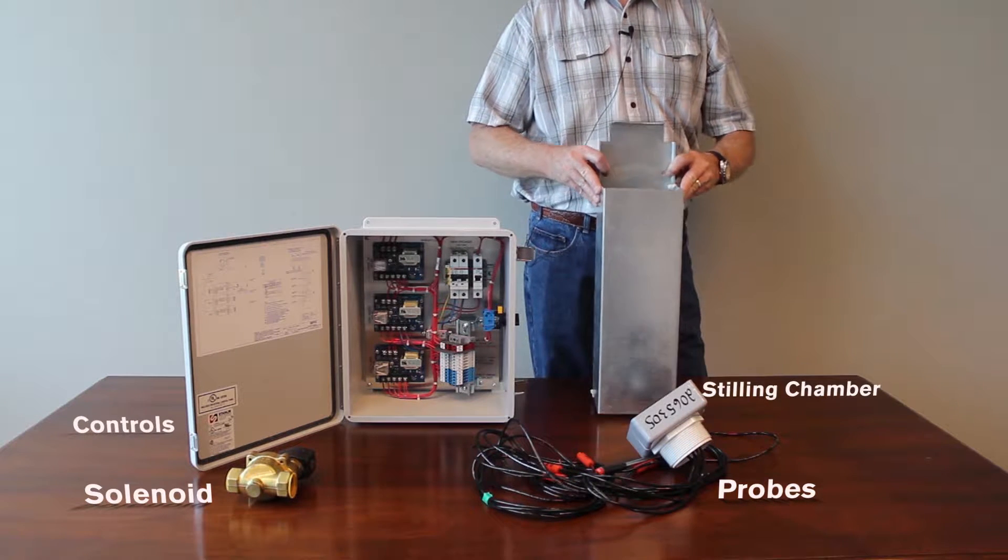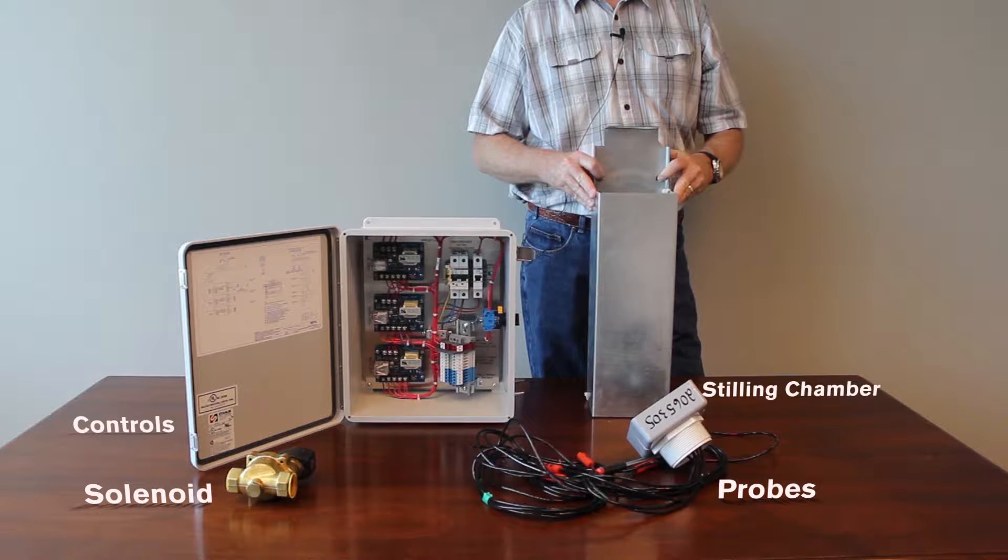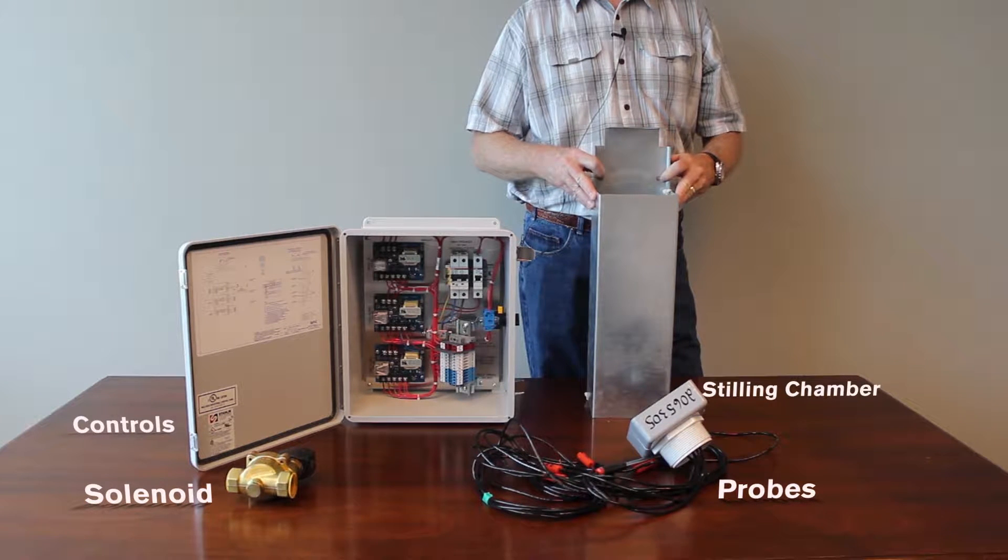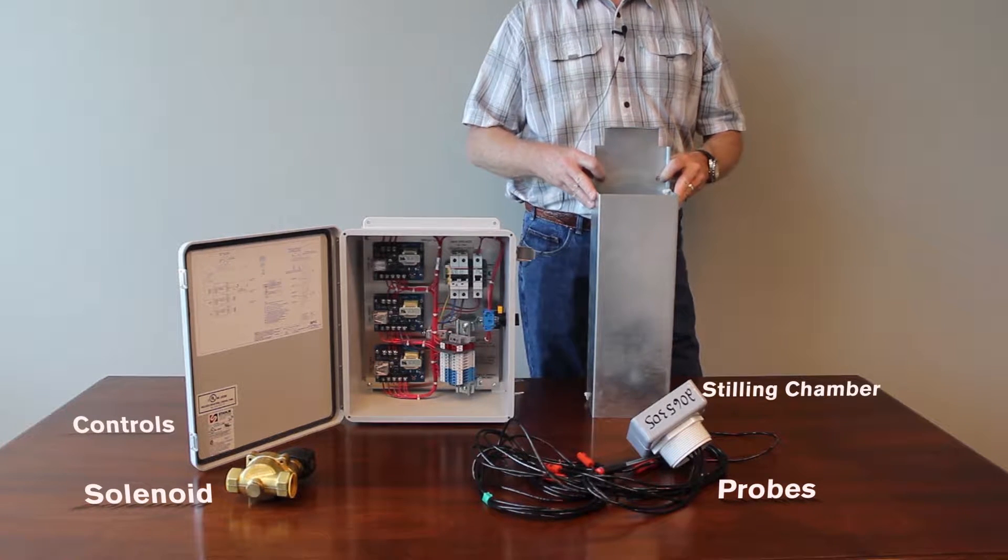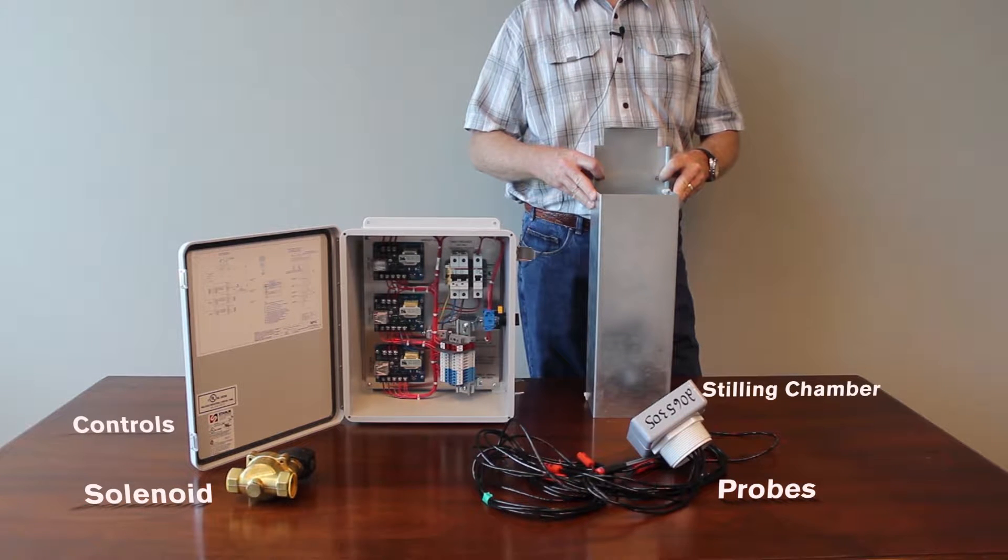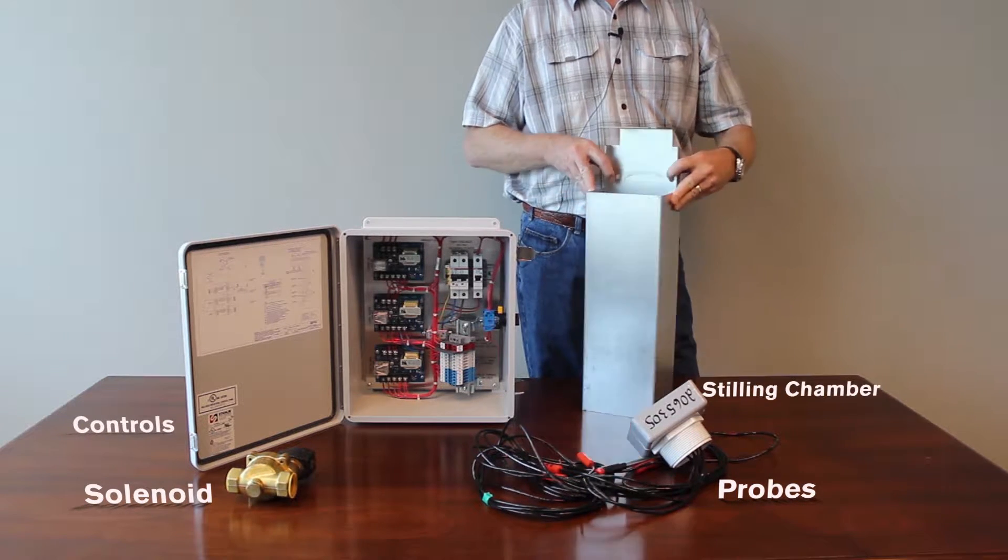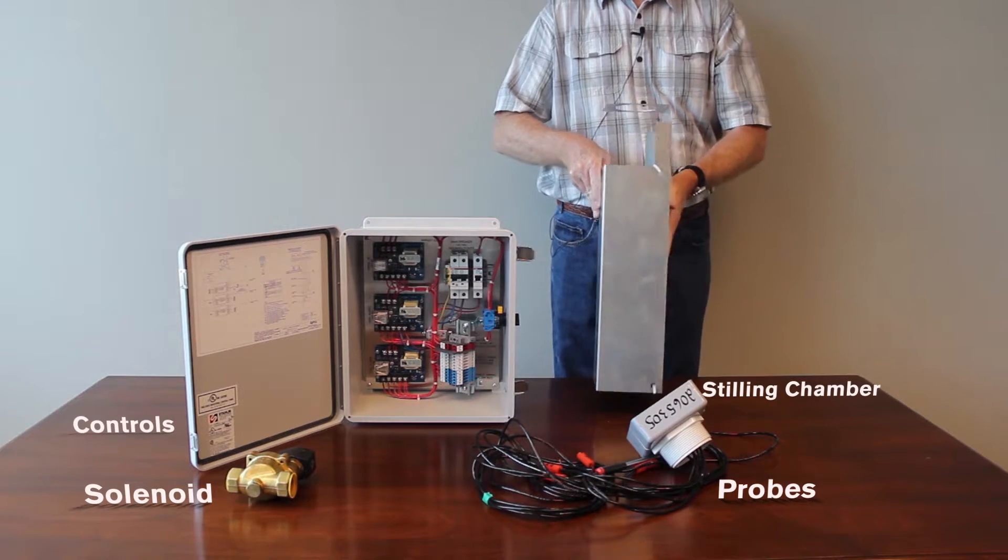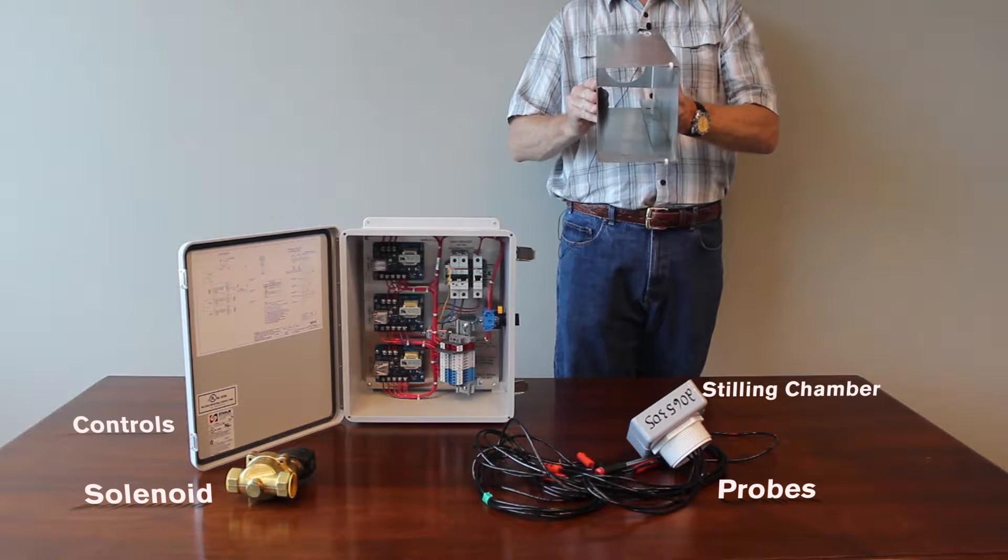The stilling chamber is typically metal. It can be stainless steel or galvanized depending on the material construction of your cold water basin. Typical location for the stilling chamber is inside the tower in the cold water basin.